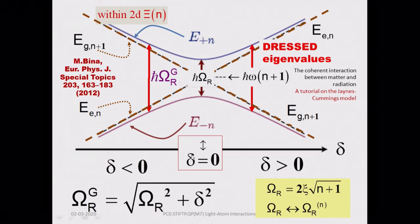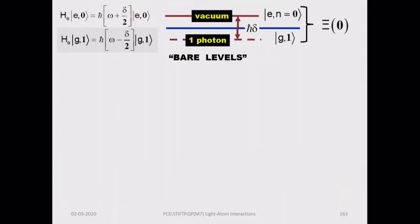This figure from the paper by Bina (2012) shows how the energies of the dressed atom change with detuning. The detuning delta equals zero at resonance, but detuning can be positive or negative because the photon energy can be greater or less than the atomic excitation energy. At resonance, the generalized Rabi frequency equals the Rabi frequency, as shown in this figure.